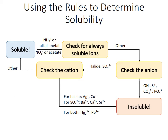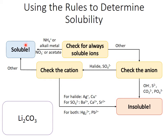Let's take a look at this in action, starting with lithium carbonate. Lithium is an alkali metal, therefore it's soluble — lithium compounds are always soluble. What if we start from magnesium carbonate instead? We don't have any of our always soluble ions, so we have to check the anion, in which case we have a carbonate — it is insoluble.